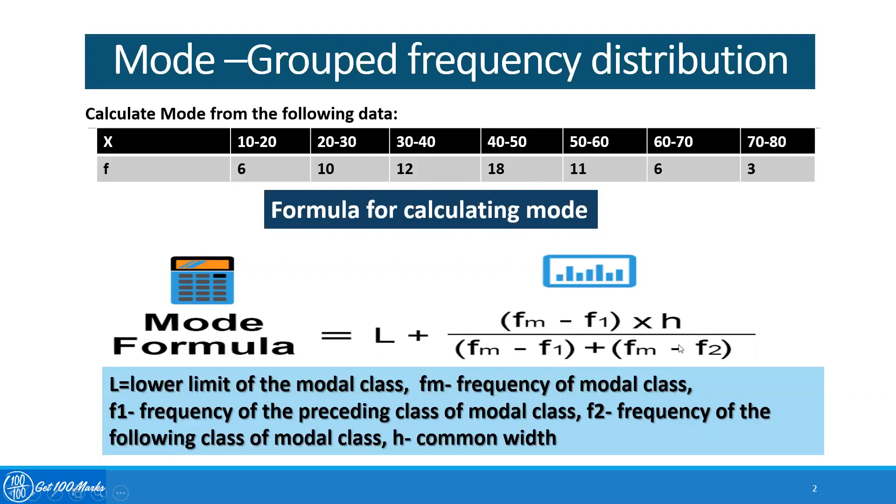And F2 is the frequency of the following class of the modal class. H is called the common width. Common width is the gap between each class interval. In this situation, from 10 to 20 or 20 to 30, this is 10.